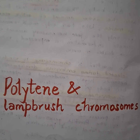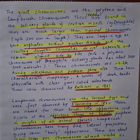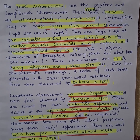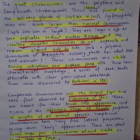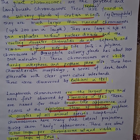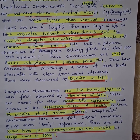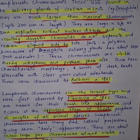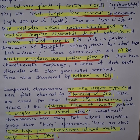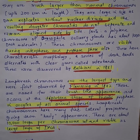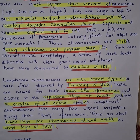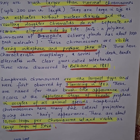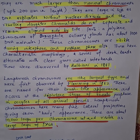Let's talk about polytene and lampbrush chromosomes. Polytene chromosomes are found in the salivary glands of certain insects and are much larger than normal chromosomes. Their large size is because DNA replicates without nuclear division, and the resulting daughter chromatids do not separate but remain aligned side by side. These are observed during the interphase and prophase stages.